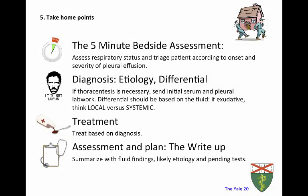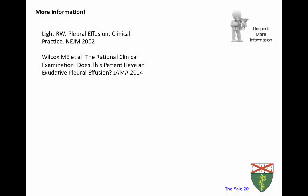Bringing it all together — key takeaways. For the five-minute bedside assessment: assess respiratory status and triage the patient based on onset and severity. For diagnostics: determine if thoracentesis is needed, then send serum and pleural labs for Light's criteria and the exudative workup. Differential should be based on the fluid — exudative means local versus systemic; transudative means heart, liver, or kidneys. Treatment is based on diagnosis or on respiratory compromise. The assessment and plan should succinctly summarize fluid findings, likely etiology, pending tests, and a plan for further management. Recommended reading includes Dr. Light's review in the New England Journal of Medicine and the JAMA Rational Clinical Examination series.